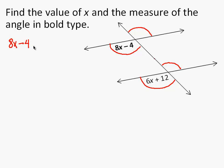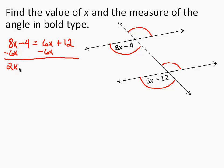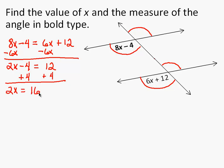So 8x minus 4 equals 6x plus 12, and I need to solve this equation. I want to get my variables on one side of the equal sign first, so I subtract 6x. That leaves me with 2x minus 4 equals 12. Now I add 4 to both sides, that leaves me with 2x equals 16. Dividing both sides by 2, x equals 8.